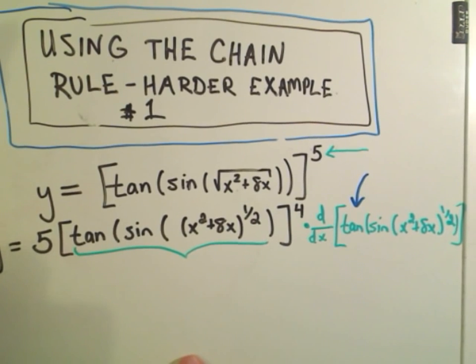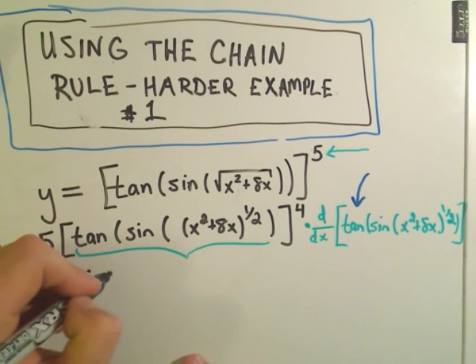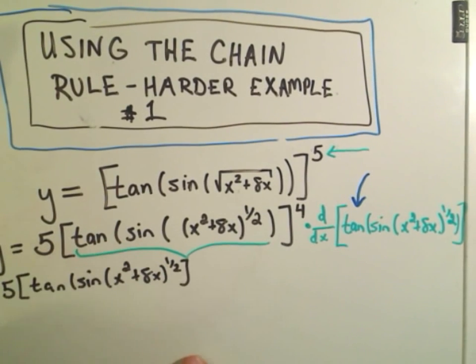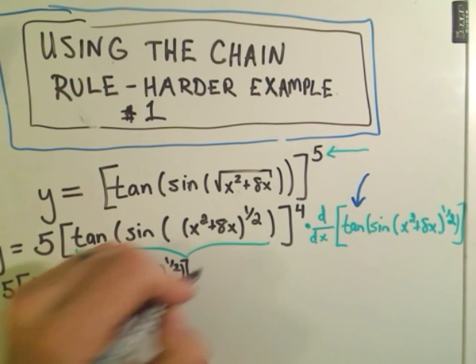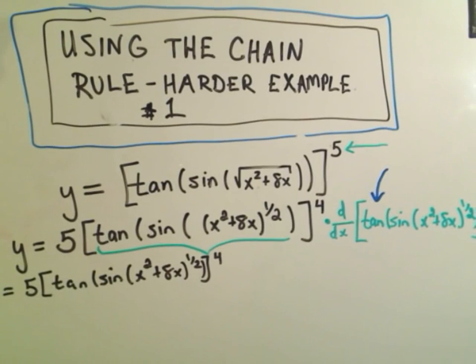But it says, so this would be, so we leave the front part alone, 5 tangent of sine of x squared plus 8x to the one-half power, all raised to the fourth power. Okay, so that part we're done with, it just keeps getting carried along.